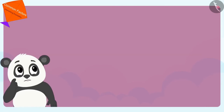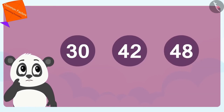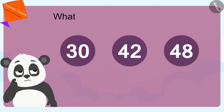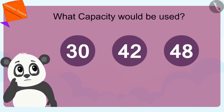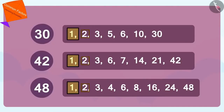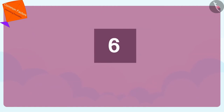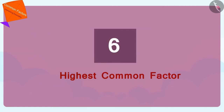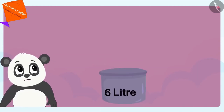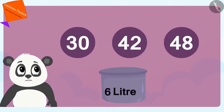Children, if Golu's pots were filled with 30, 42 and 48 liters of milk, can you tell what capacity would be used? If you want, you can pause the video and find the answer. These numbers 1, 2, 3 and 6 are the common factors of 30, 42 and 48. Out of them, 6 is the highest number or the highest common factor. Therefore, Golu would use only a 6-liter pot to measure 30, 42 and 48 liters of milk.